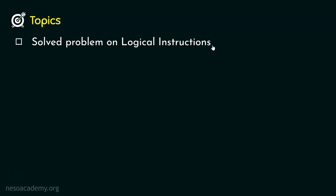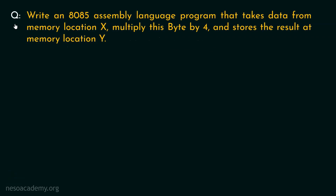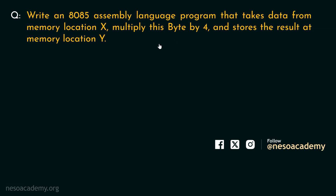Consider the question: write an 8085 assembly language program that takes data from the memory location X, then multiplies this byte — that is, the data of one byte which we have just fetched from the memory location X — by 4, and then stores the result at the memory location Y.